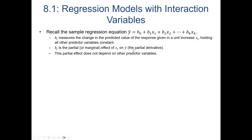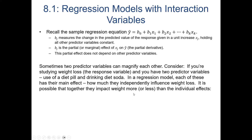For those who've studied calculus, this is referred to as the partial derivative. If you hold all values constant and look at that slope, the units are rise over run — whatever the units of response per one unit increase in the predictor variable — and it does not depend on other predictor variables. That's straightforward multiple linear regression.